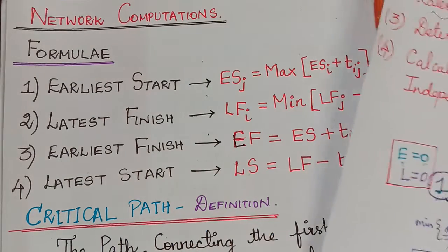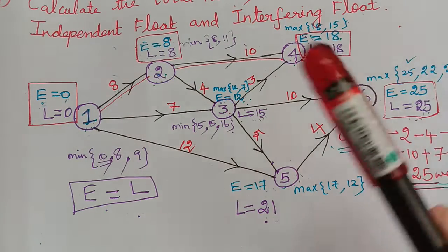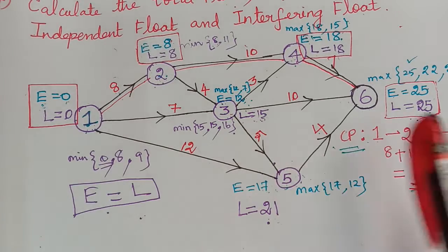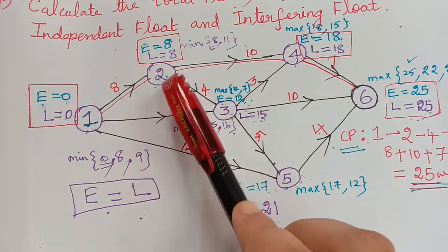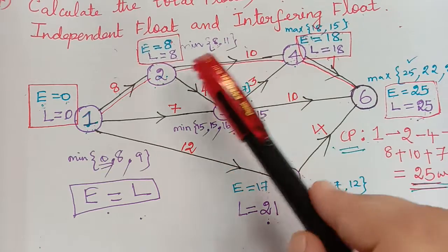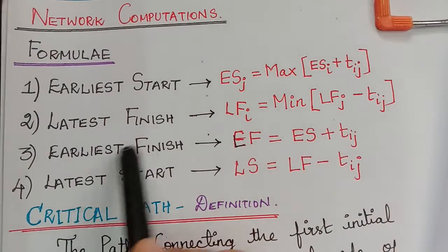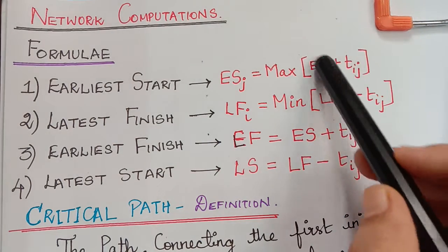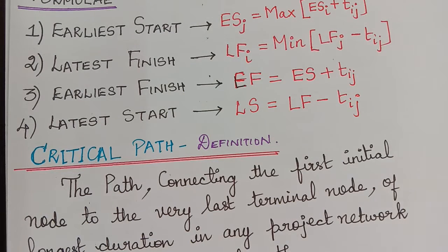That kind of calculation is known as forward pass, because we calculated in the forward direction. Then after completing the forward calculations, we had the backward pass where we calculated the value of L. While calculating the value of L, if there were two activities emanating from an activity, we choose the minimum of the two values — the previous L value minus the duration. So the latest finish is given as the minimum of LFJ minus TIJ, where TIJ is the duration.